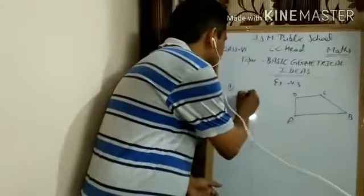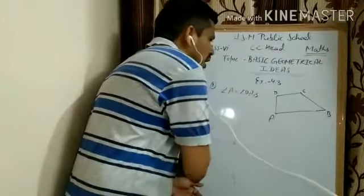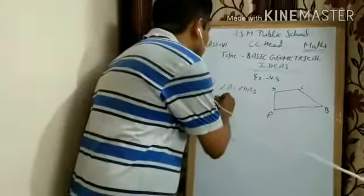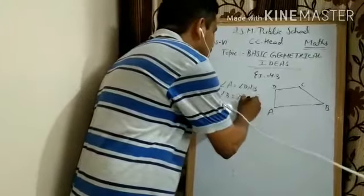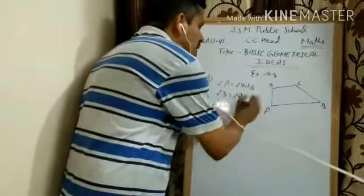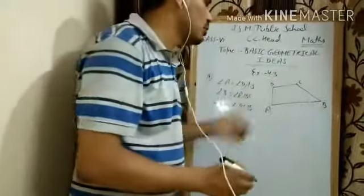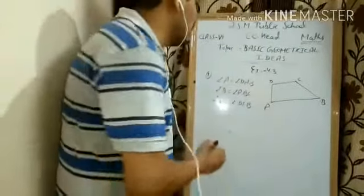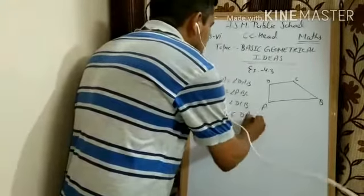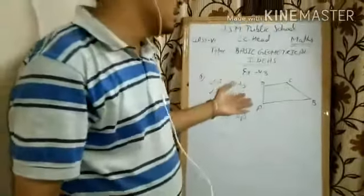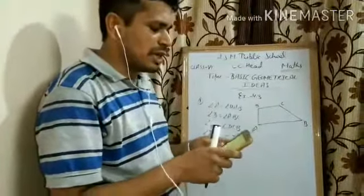So we have to tell the names of four angles. Angle A - the full name is angle DAB. For angle B, the full name is angle ABC. For angle C, you can write angle DCB, or you can say BCD - both are correct. And for angle D, the name will be angle CDA. So these are the four names we have to tell in Question 1.